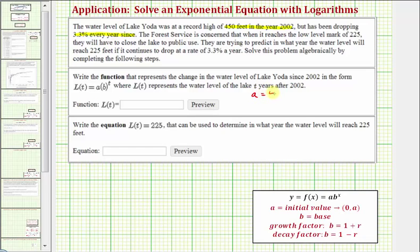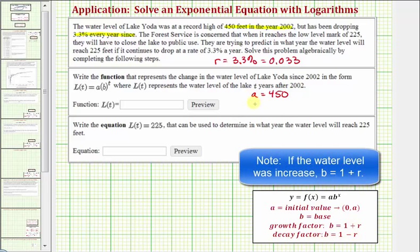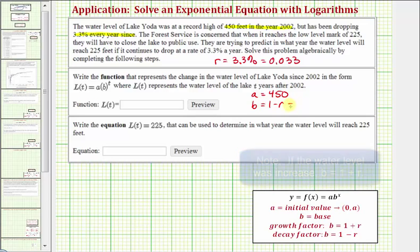Notice the water level is dropping at a rate of 3.3% per year, which means r equals 3.3%, which must be expressed as a decimal, which would be 0.033. And now because the water level is dropping 3.3% each year, the base b is called the decay factor, which is equal to 1 minus r. So b equals 1 minus 0.033, so the base is 0.967, which means L(t) equals 450 times 0.967 raised to the power of t.